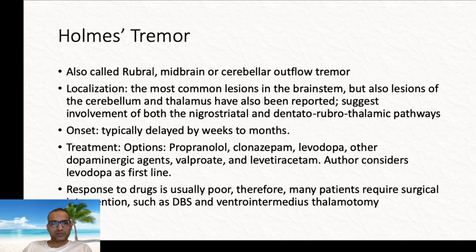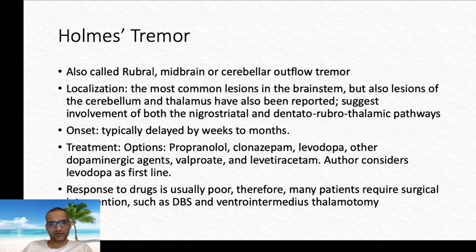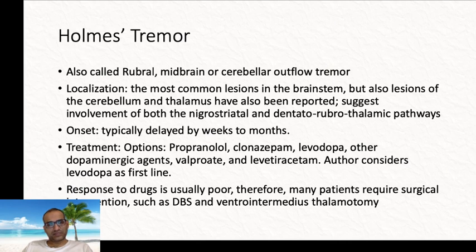The article then discusses Holmes' tremor, also called rubral, midbrain, or cerebellar outflow tremor. The lesion is typically in the brainstem, but can also involve the cerebellum or thalamus. Onset is usually delayed from weeks to months. Medical treatment options are similar to essential tremor, but response is generally poor. If it is disabling, surgical intervention may sometimes be needed.